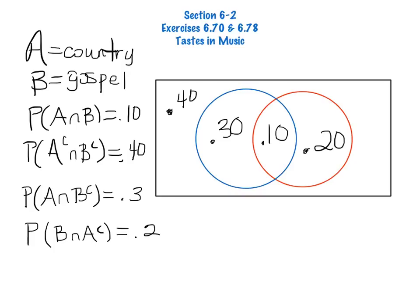So now when you look at parts B and C of this question, part B asks, what percent of college students like country but not gospel? Well, that would be A intersected with B complement. And so that is just the part that we see here. I like only country. I don't like gospel. So that answer is .3.